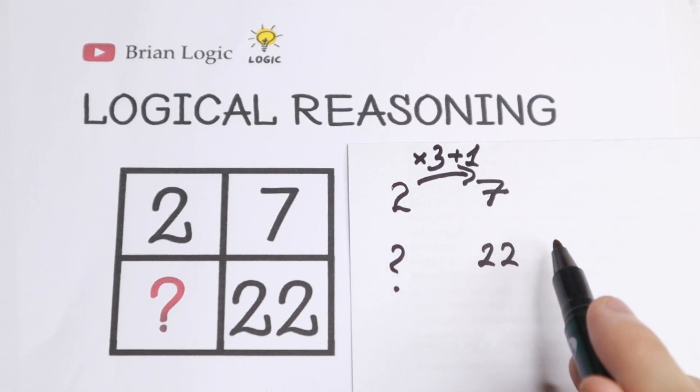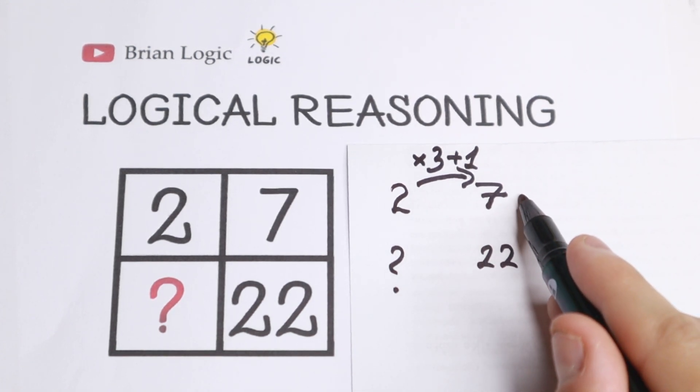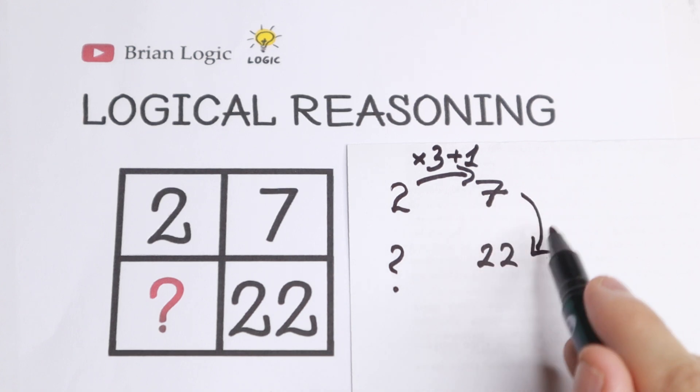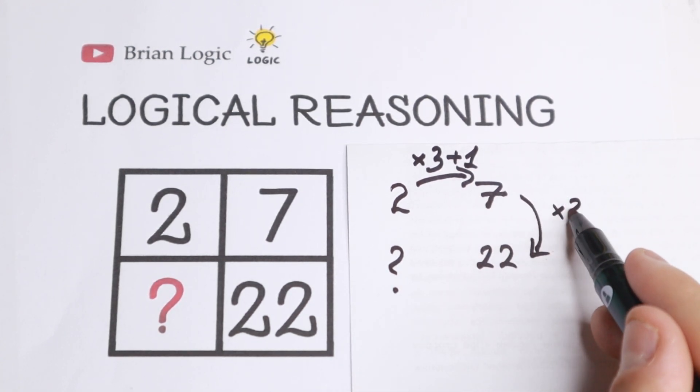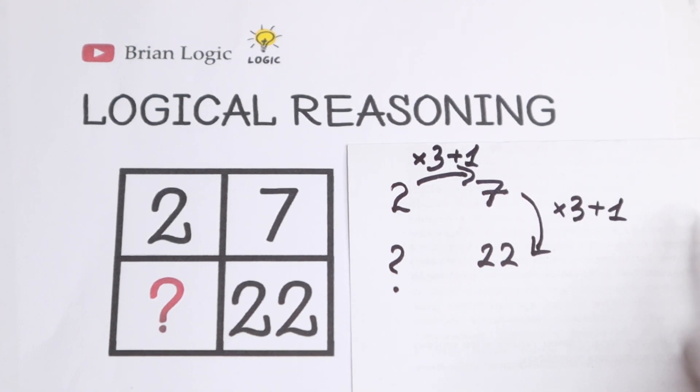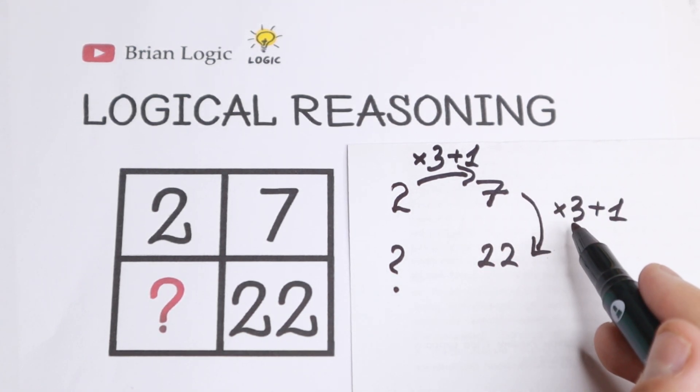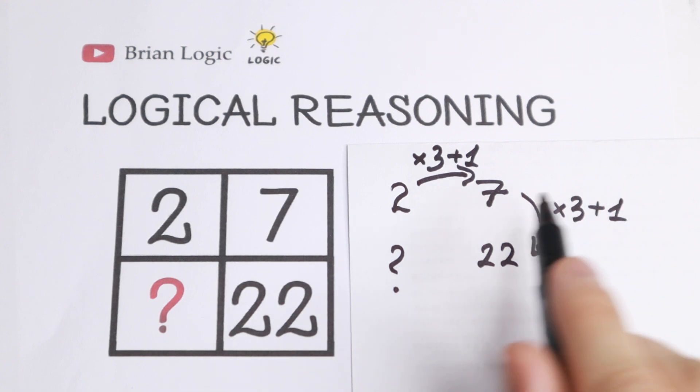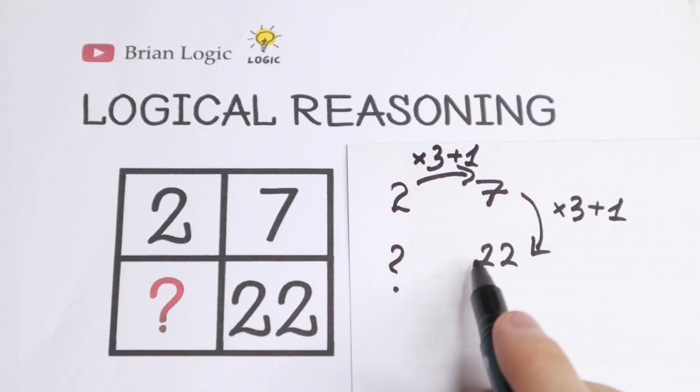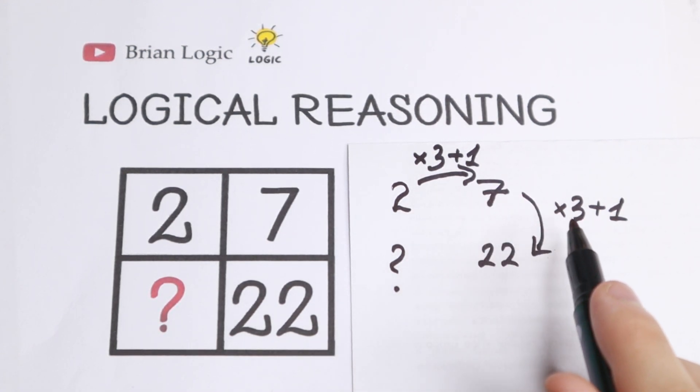What about this 22 and this 7? Because if we look closely to this, if we go in this way, if we multiply this 7 by 3 and add 1, what we'll have? We'll have really interesting case because 7 times 3 will have 21 and 21 plus 1, we will have 22. So it's really good because we find our pattern between all these three numbers. Multiplying by 3 and add 1.